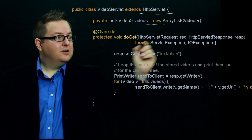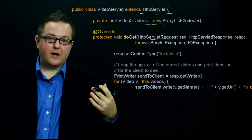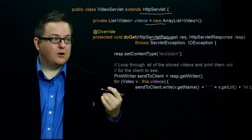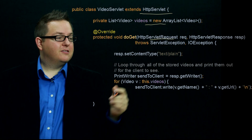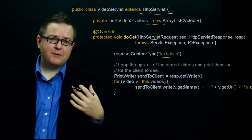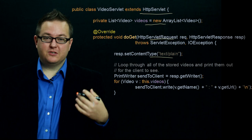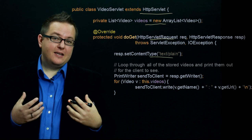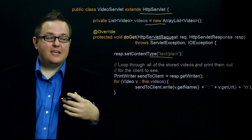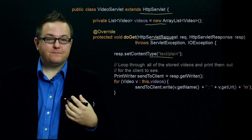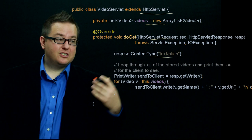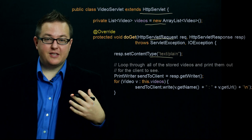We have this list, and in our doGet method, if someone sends a GET request, the doGet method on our servlet is invoked. The first thing it does is set the content type. The idea is that the servlet wants to tell the client how to interpret the results it's sending back. In this case, we're just sending plain text, so we set the content type to plain text — the MIME type sent back to the client — so the client knows to interpret it as plain text, not HTML, video, or an image.